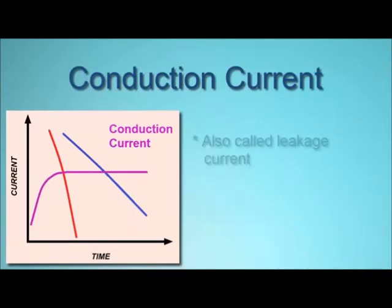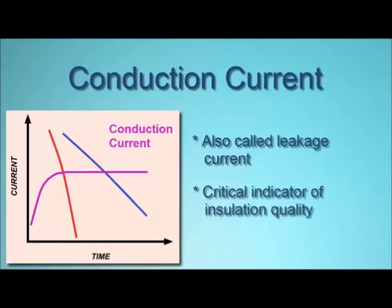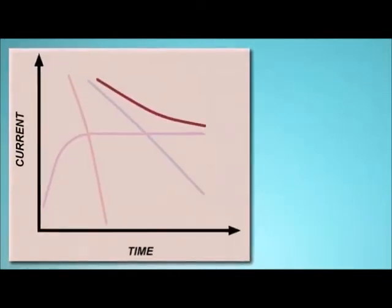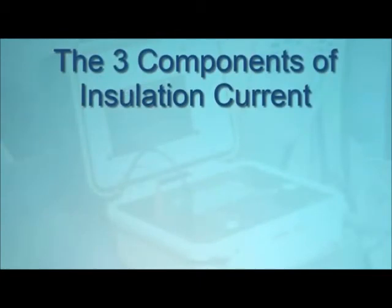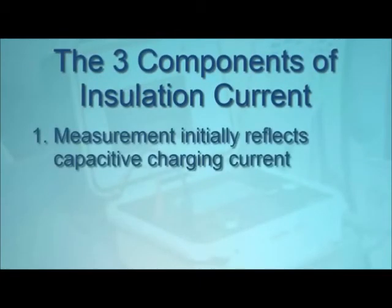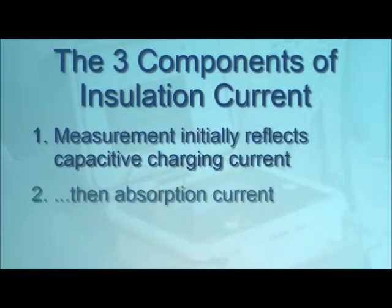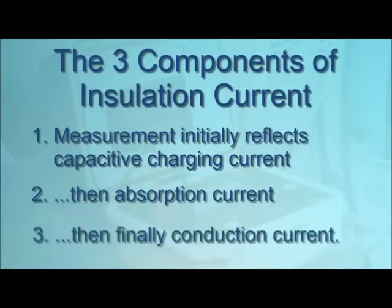Conduction current, often called leakage current, is the steady current present both through and over the insulation. This is a critical measurement, since an increase in conduction current over time is a likely indication of deteriorating or damaged insulation. Combining these three components produces a total insulation current profile similar to the illustration shown on the screen. To summarize: the initial measurement primarily reflects capacitive charging current; after a period of time, absorption current is dominant; and beyond 1 to 10 minutes, the measurement is mainly composed of conduction current — the primary value used to calculate the quality of insulation resistance. Understanding how these individual currents contribute to the total insulator current can help you correctly interpret the results you receive when performing a test.